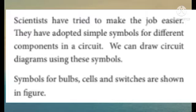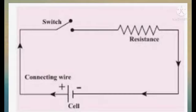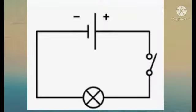Symbols for bulbs, cells, and switches are shown in the figure. In a cell, the longer line denotes the positive terminal and the shorter line denotes the negative terminal. We shall use these symbols to show components in the circuits we draw. Such diagrams are called circuit diagrams.